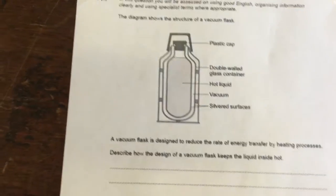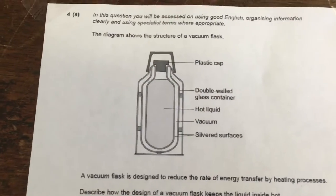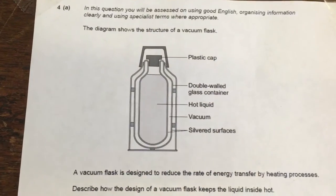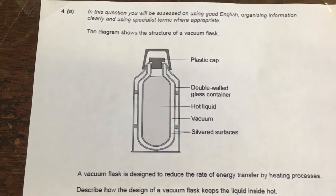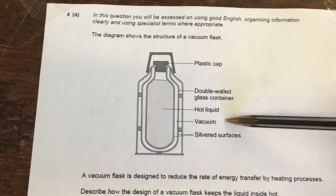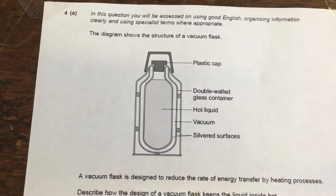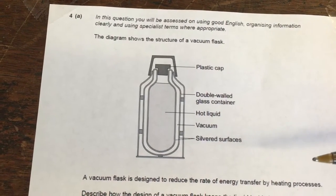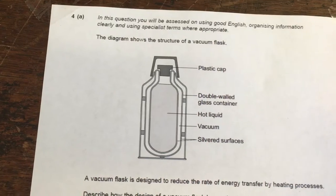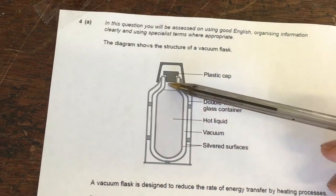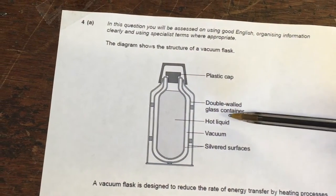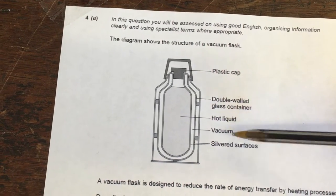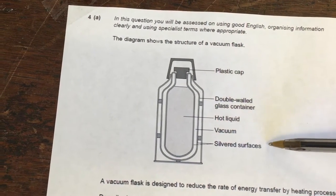This example question is quite a nice one, but a lot of people get confused. It says the diagram shows a picture of a vacuum flask and labels certain parts. Since they've taken the time to label them, you need to mention them in your answer. The labelled parts are: a plastic cap, a double-walled glass container, hot liquid, vacuum, and silvered surfaces.